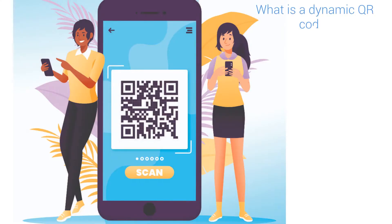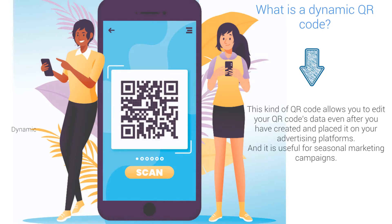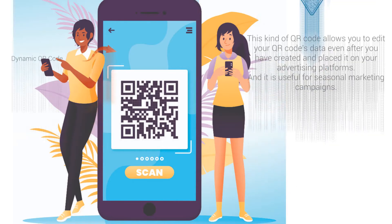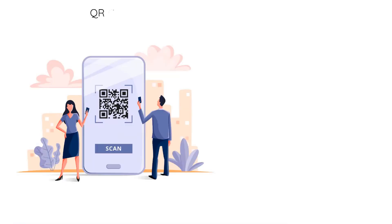So what is a dynamic QR code? This kind of QR code allows you to edit your QR code's data, even after you have created and placed it on your advertising platforms. It is useful for seasonal marketing campaigns. QR codes have two kinds, which are static and dynamic codes.